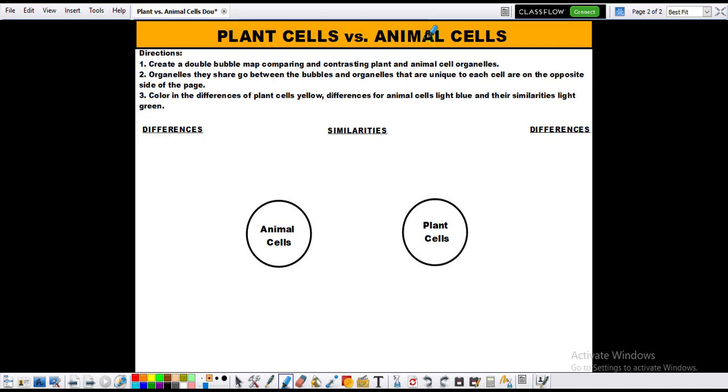So this is kind of reviewing. The directions say create a double bubble map comparing and contrasting plant and animal cell organelles. So when you're comparing them, you're giving similarities. And when you're contrasting them, you're talking about the differences that they have.